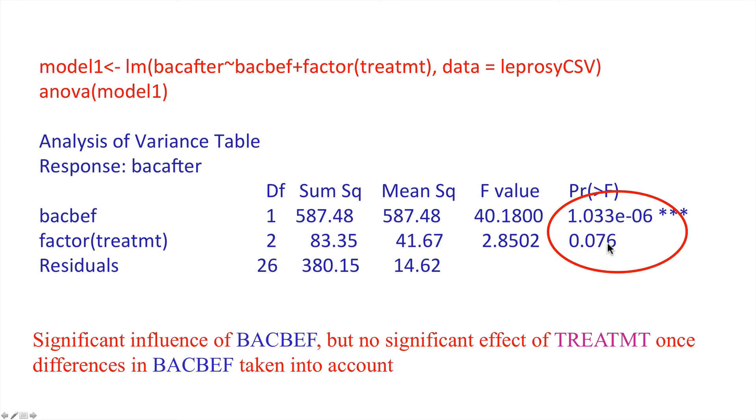However, if we were to use the threshold of 5%, we don't really have very strong evidence to reject the null hypothesis that there is no effect of the factor, the drug, on the bacillus after once you control for bacillus before.